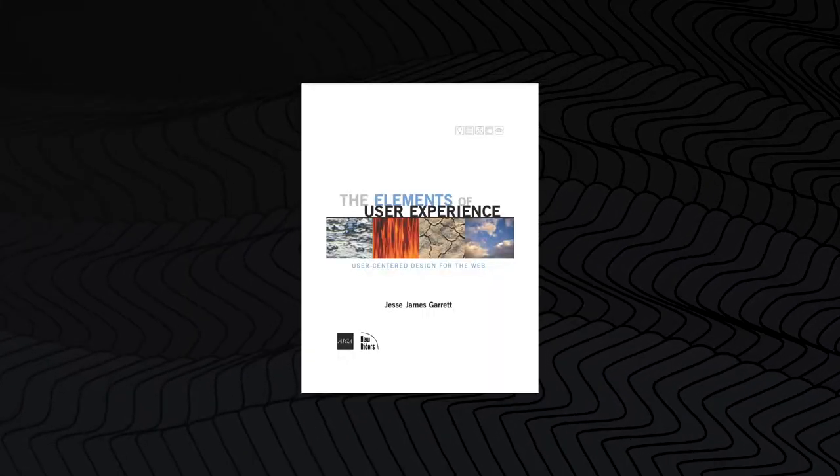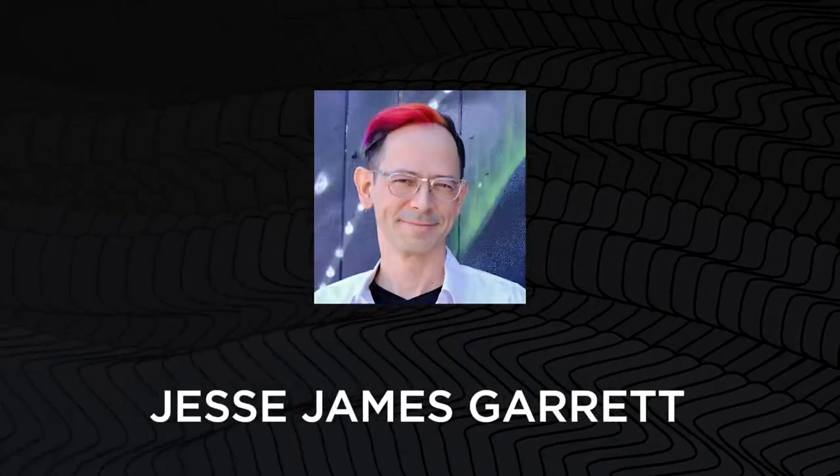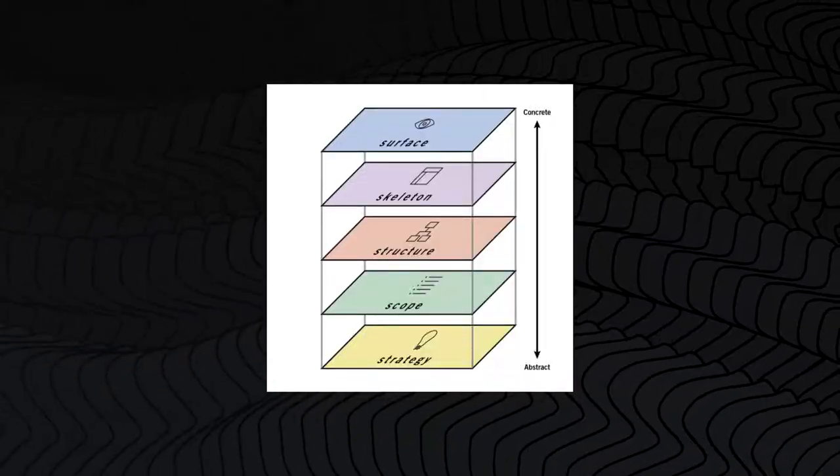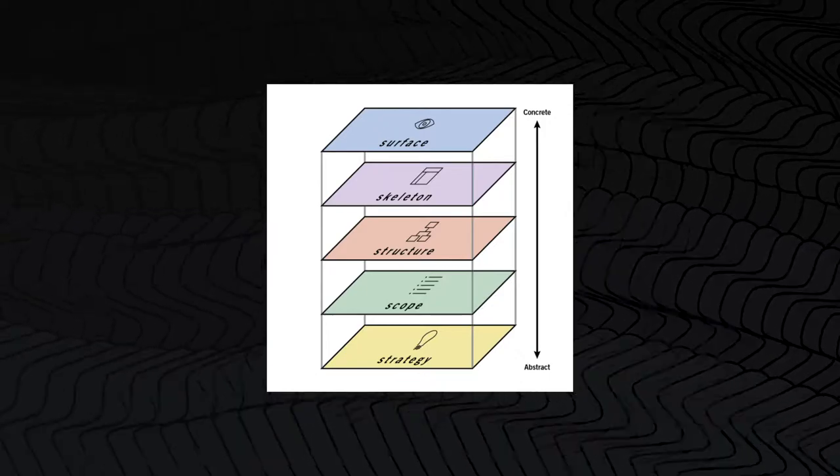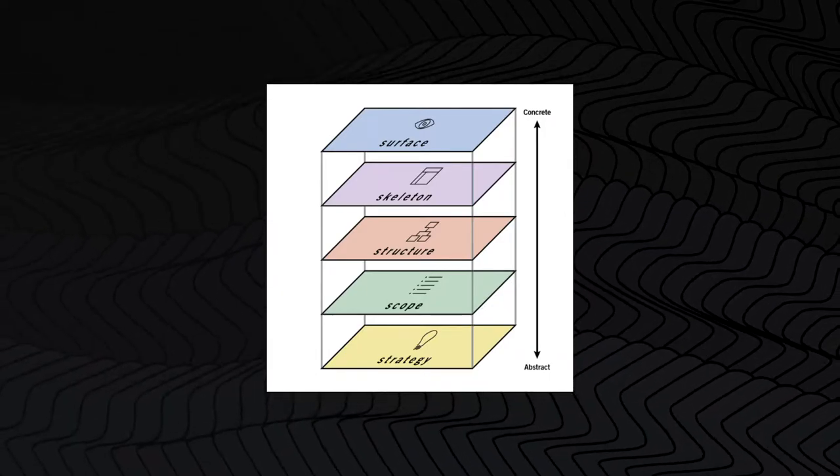In the 2002 book, The Elements of User Experience, Jesse James Garrett talks about user experience using this five-layer diagram as a metaphor for the layers that inform one another when building a product.